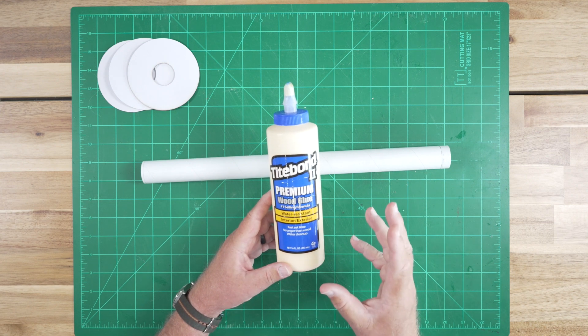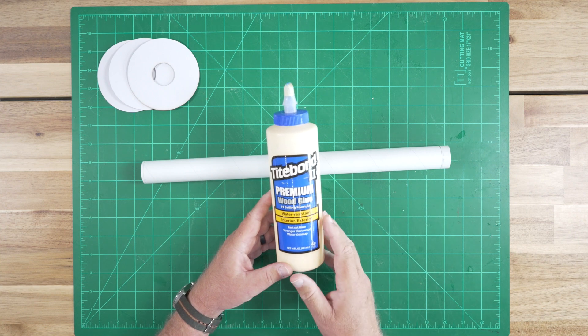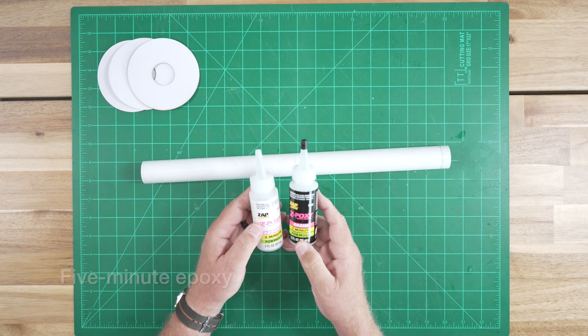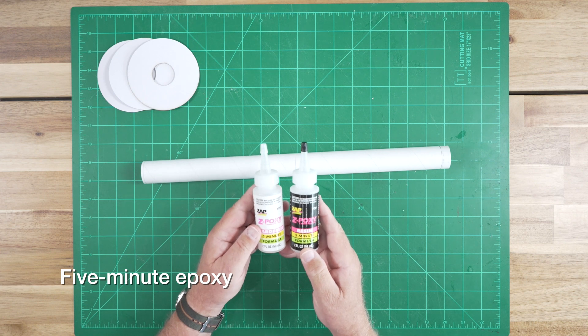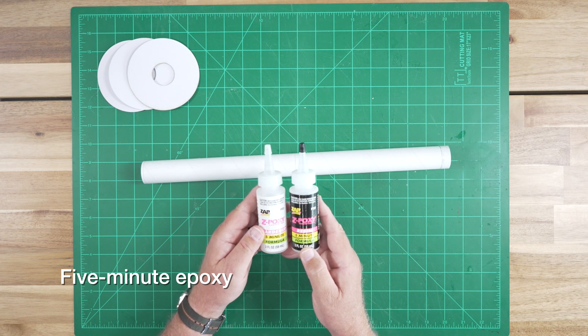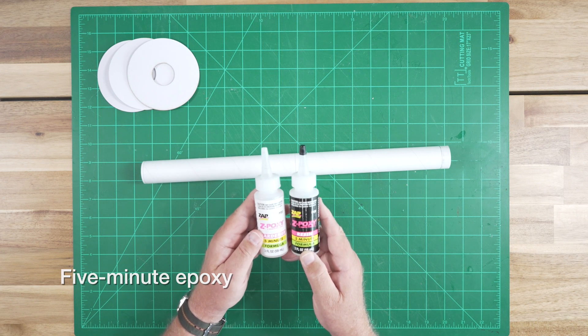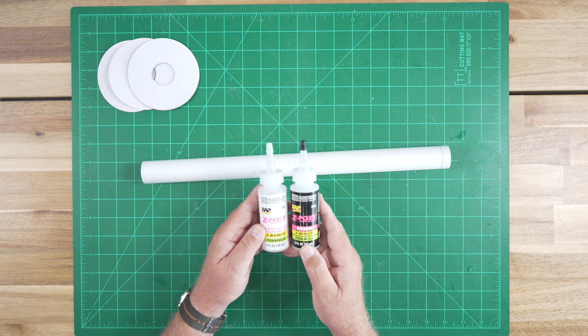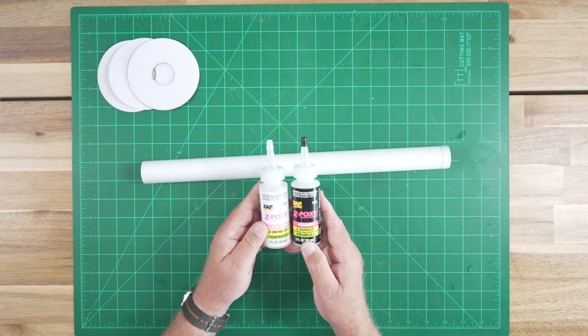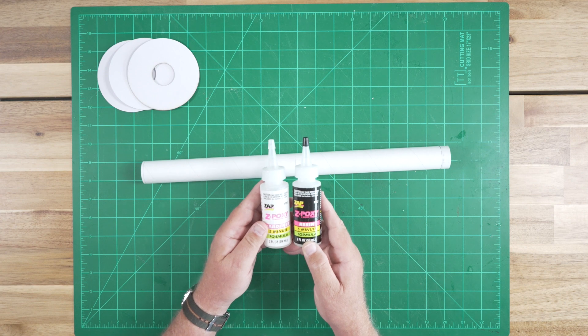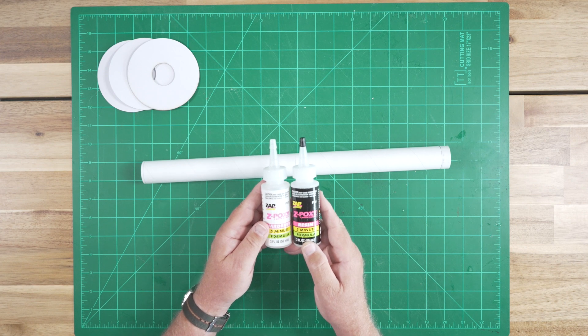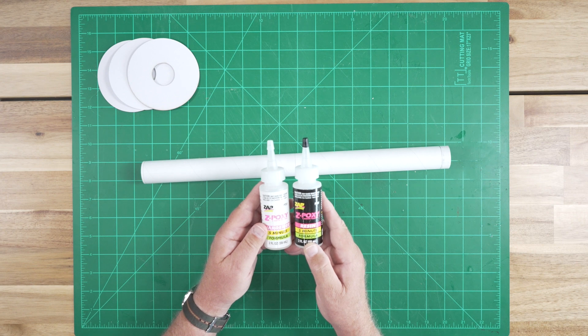And that can leave a dimple on the exterior of your model. Instead, we're going to use five-minute epoxy to install the centering rings onto the motor mount tube and then install that assembly within the airframe tube. That's because epoxy is a dimensionally stable adhesive. It won't change size or shape as it cures, leaving a telltale dimple on the outside of your rocket.